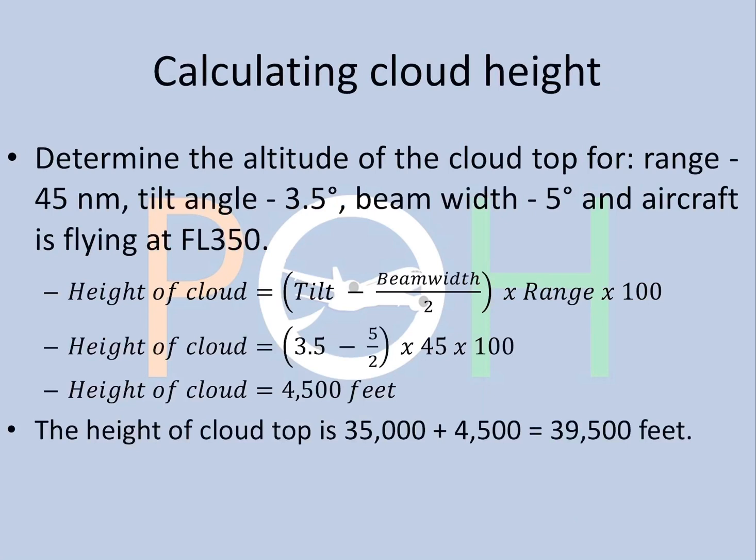Here is an example using the formula to calculate cloud height. Determine the altitude of the cloud top given: range 45 nautical miles, tilt angle 3.5 degrees, beam width 5 degrees, aircraft at 35,000 feet (FL350). The height of the cloud formula is: (tilt − beam width / 2) × range × 100. Putting in the values gives a cloud height of 4,500 feet above the present position, so the altitude is 35,000 + 4,500 = 39,500 feet.